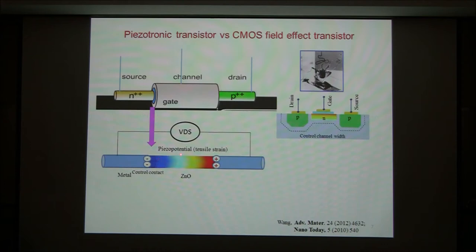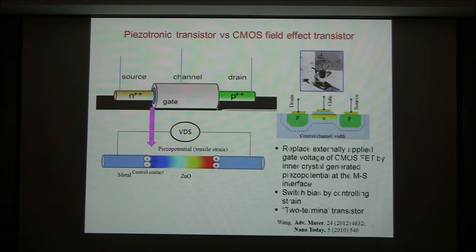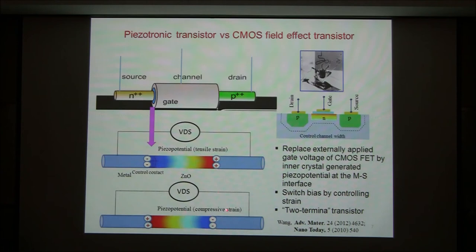The idea is that regardless of the width of the channel, if we control the interface through which the carrier flows, this is the control — same as a gate does. The gate controls the channel width; this controls the exit phase. You can control it from tensile strain, and you can reverse to compressive strain — the polar direction of the piezoelectric charge reverses. It's positive on one side, then you can control the left-hand or right-hand side of the device depending on which strain is applied — the strain-gated transistor.